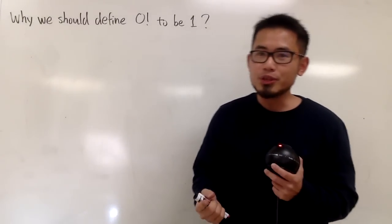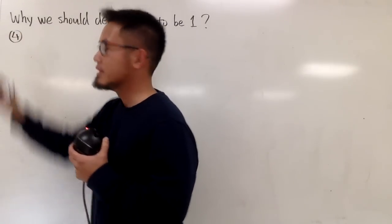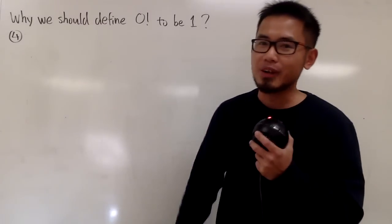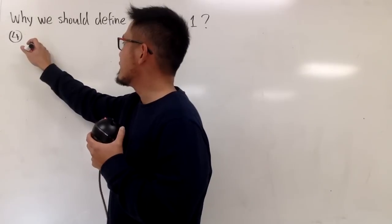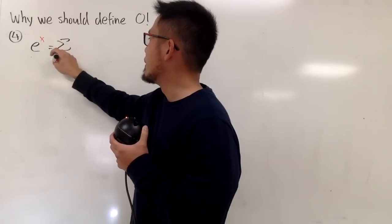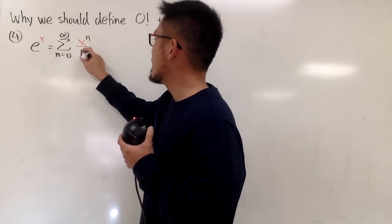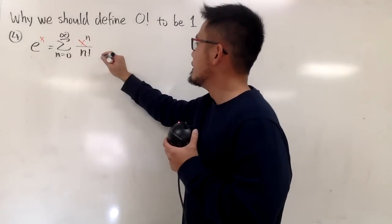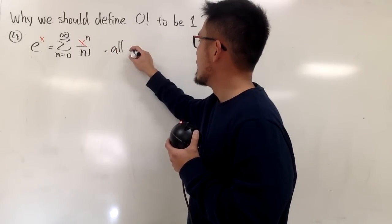Now I'll show the last reason, which uses power series. I'll use e to the x as an illustration. Recall that based on the power series, e to the x equals the sum as n goes from 0 to infinity of x to the n over n factorial, and this is valid for all x values.